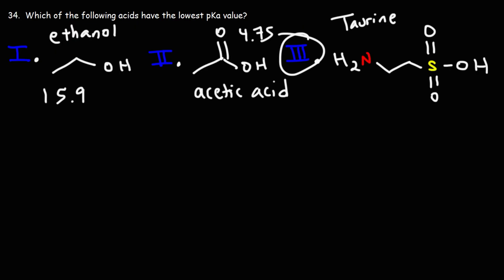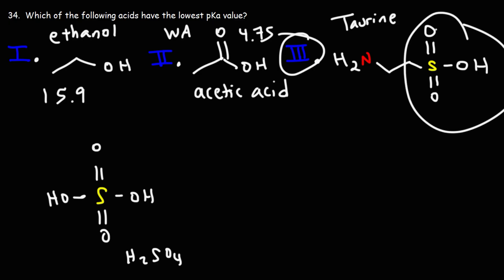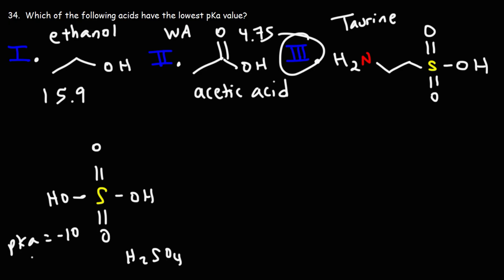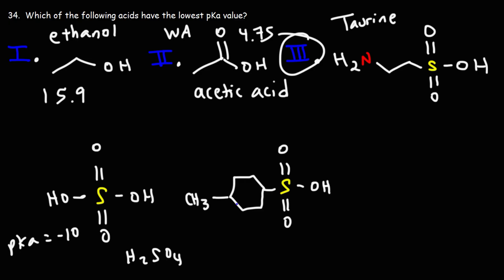To put this in perspective, consider sulfuric acid — a very strong acid. Sulfuric acid looks very similar to a sulfonic acid, and its pKa is around negative ten. Here's another common sulfonic acid you'll see in organic chemistry 2: para-toluene sulfonic acid. Toluene is benzene with a methyl group; the methyl group here is on the para position, hence para-toluene sulfonic acid.